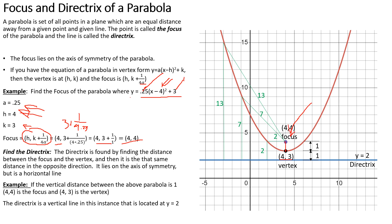The directrix is found by finding the distance between the focus and the vertex — in this case just 1 — and then going the opposite direction along the axis of symmetry. Since it's 1 from vertex (4,3) up to focus (4,4), we drop down 1, giving y equals 2. The directrix is a line tangent to the vertex on the opposite side. Whatever distance you travel from focus to parabola, that same distance dropped vertically reaches the directrix.